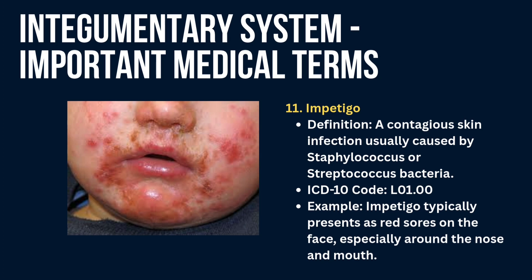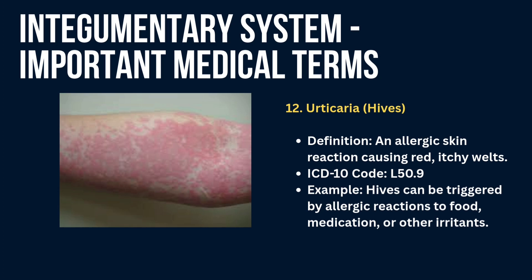Next is urticaria or hives — an allergic skin reaction causing red, itchy welts. Example: hives can be triggered by allergic reactions to food, medication, or other irritants. You can check out the image to see how urticaria looks.